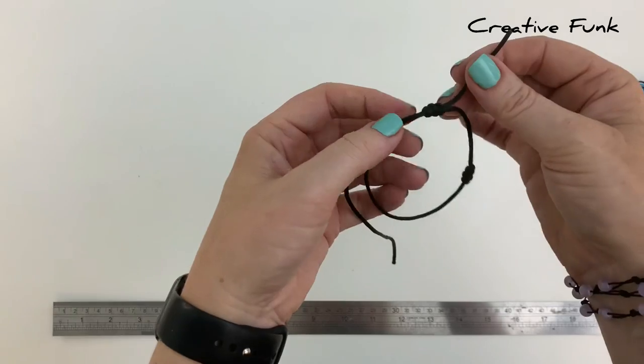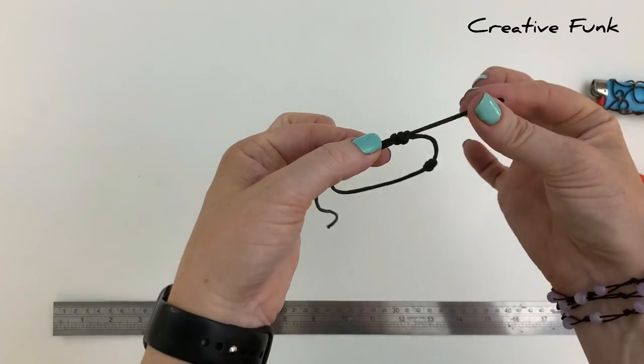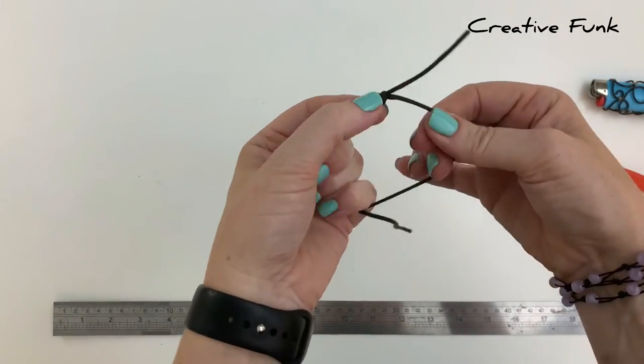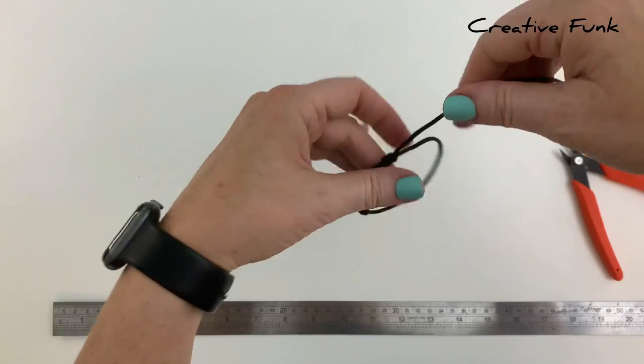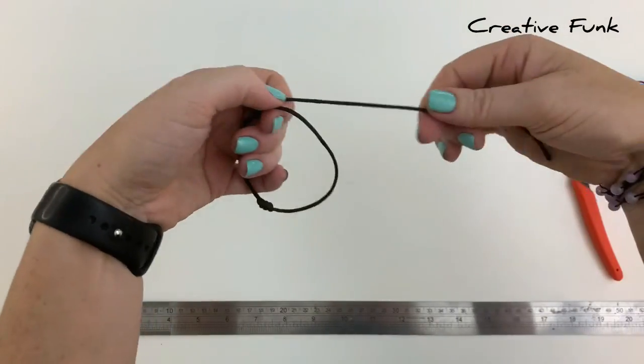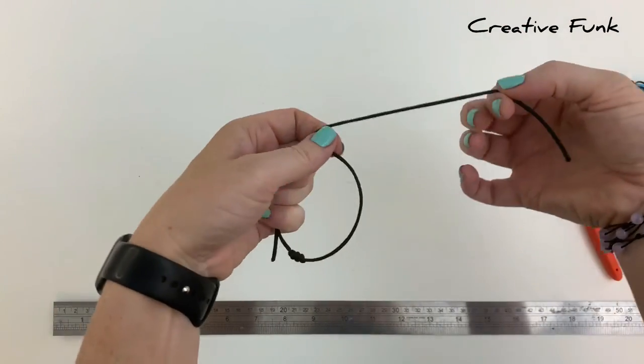Now we can swap our bracelet onto the opposite side, holding it in our left hand with this left side cord at the back.